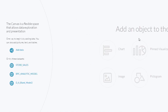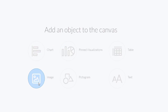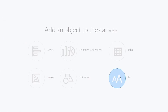Clicking into this you can then see your additional options. On the left-hand side you can add data or use an existing data set. And then you can also select to add an object such as chart, pin visualizations, table, image, pictogram, or text.